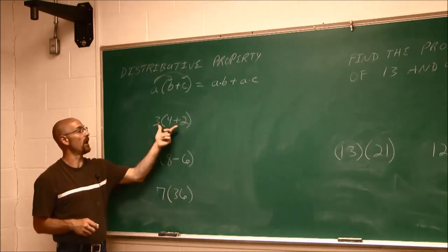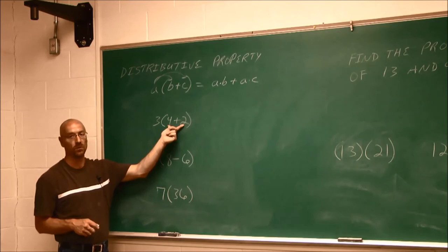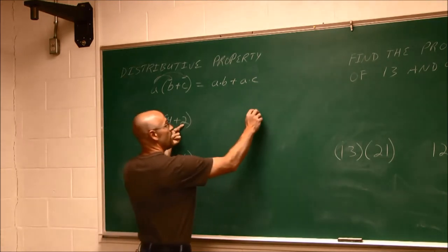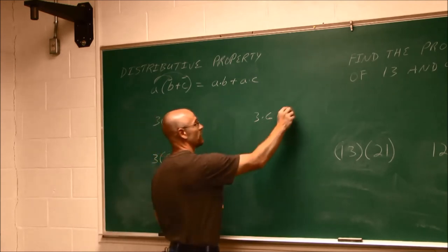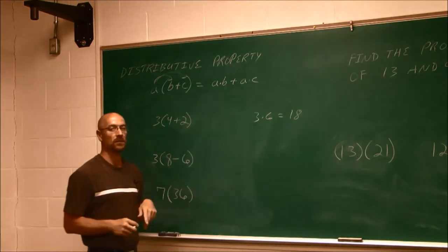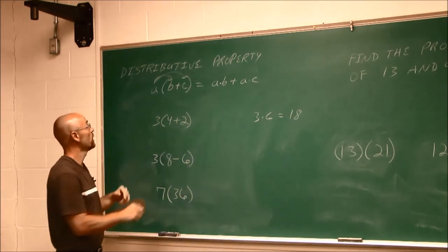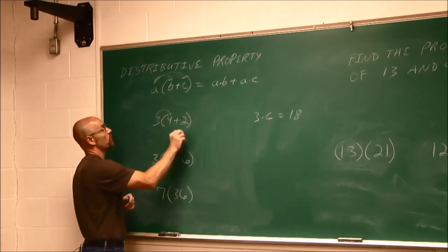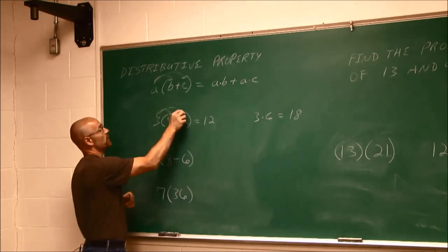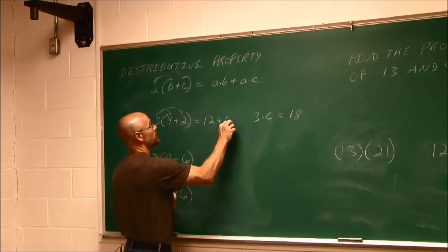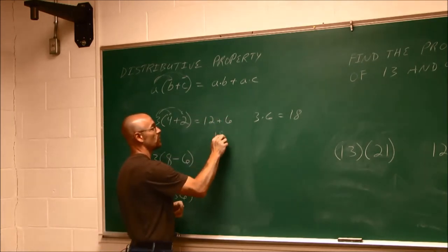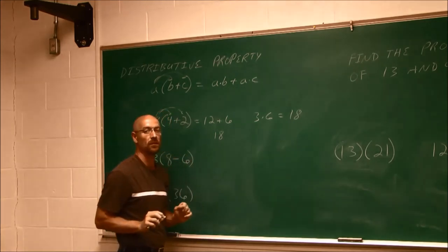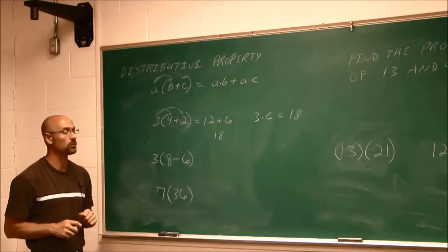Now, if we look at this example, I could say 4 plus 2 is 6, and then multiply it by 3. 3 times 6 is 18. But I want to show that the distributive property holds true. So if I say 3 times 4 is 12 and 3 times 2 is 6, 12 plus 6 is also 18. So we get the same result. The distributive property holds true.